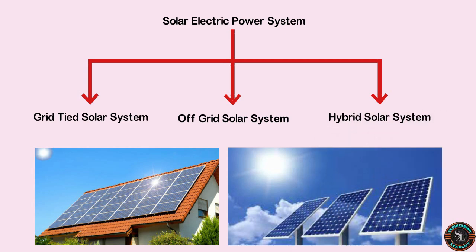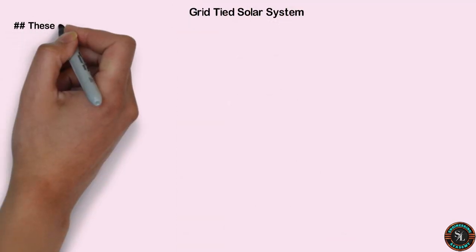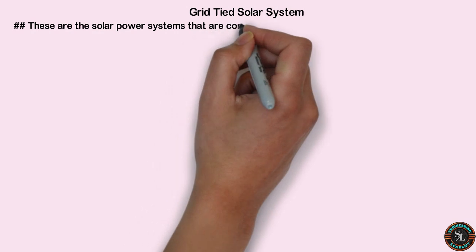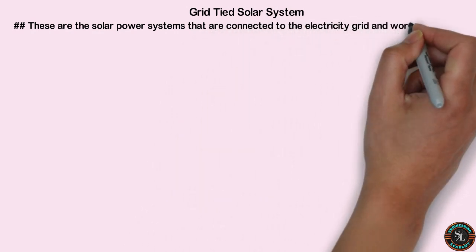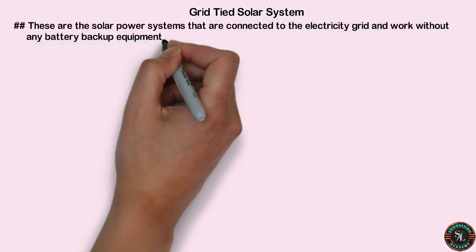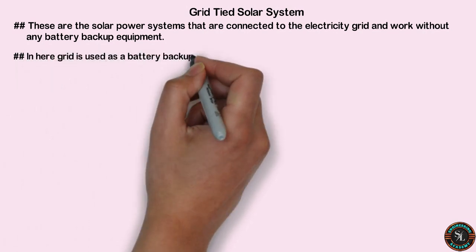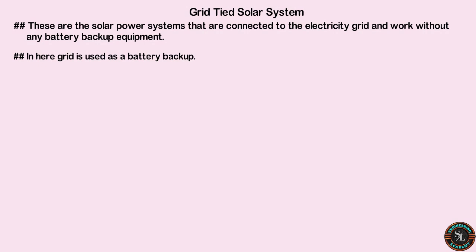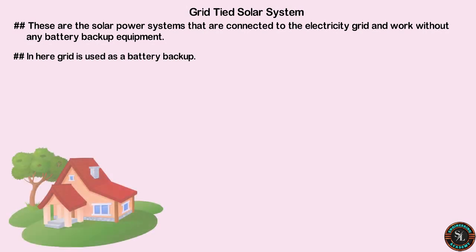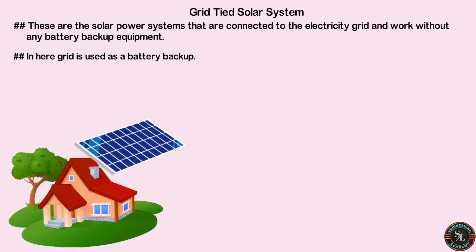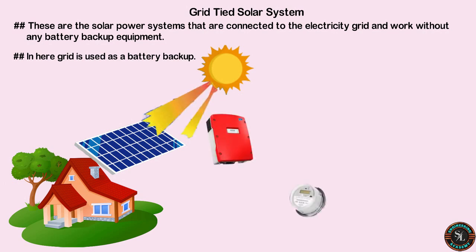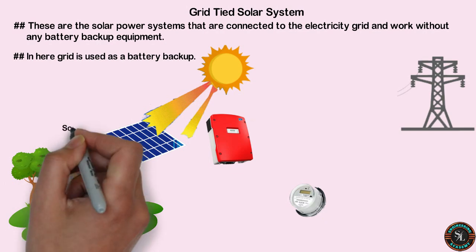First we will talk about the grid-tied solar system. These are solar power systems that are connected to the electricity grid and work without any battery backup equipment. This system mainly uses solar panels and an inverter. Solar panels are connected in a series circuit to increase the voltage and reduce the current. Here the grid is used as a battery backup. I will explain the grid-tied solar system using a diagram.